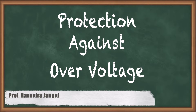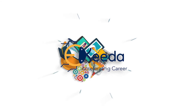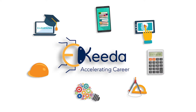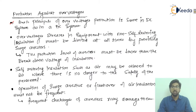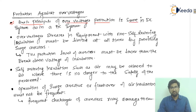The first point is the basic principle — the basic principle of overvoltage protection is the same in the DC system as in the AC system.